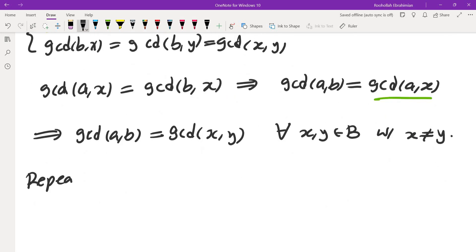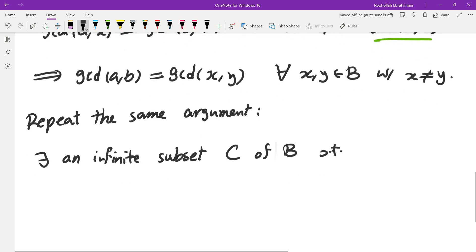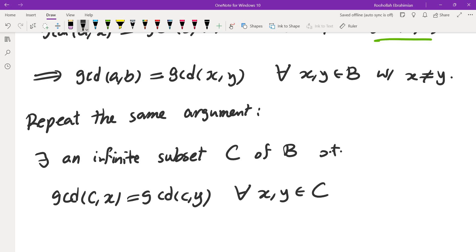So repeat the same argument. So we find a subset. There is an infinite subset C of B such that gcd(C,X) is equal to gcd(C,Y) for every X and Y in C.